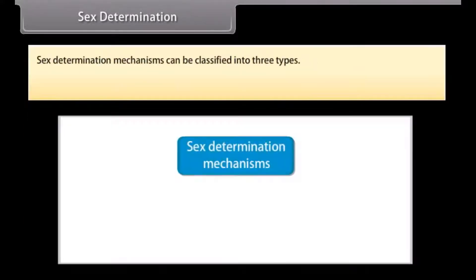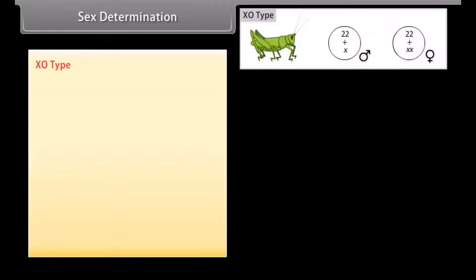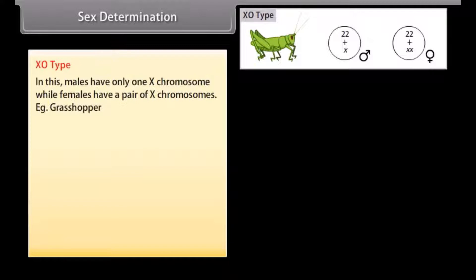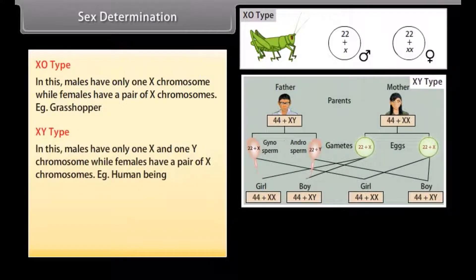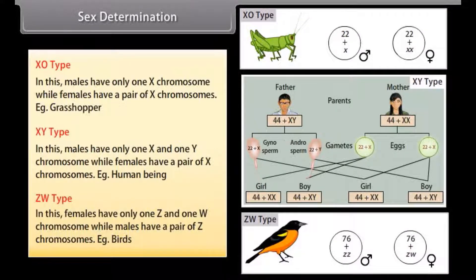Sex determination mechanisms can be classified into three types: XO type, XY type, and ZW type. In the XO type, males have only one X chromosome while females have a pair of X chromosomes — example: grasshopper. In the ZW type, females have one Z and one W chromosome while males have a pair of Z chromosomes — example: birds.